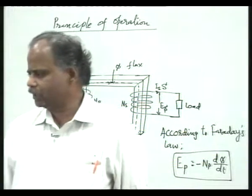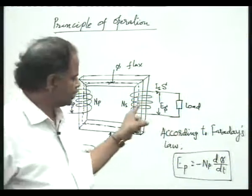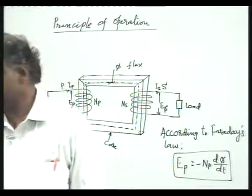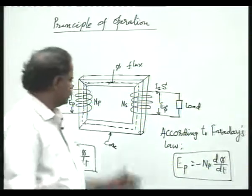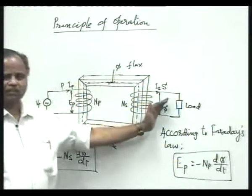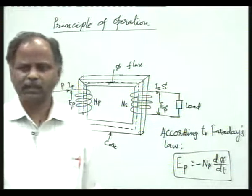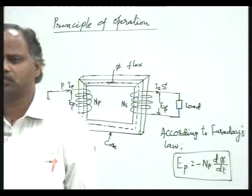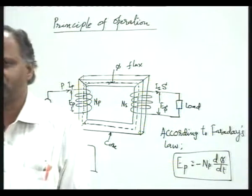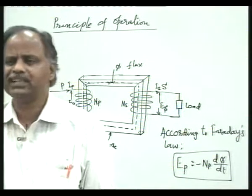The mutually induced EMF in the secondary coil S will circulate current in the load circuit provided the load circuit is complete. Hence, energy is being transferred from the primary coil to the secondary coil by means of a mutual magnetic field. Here we have supplied the energy and here the energy is available. That means the transfer of electrical energy from primary to secondary has taken place, and thereby the device is known as a transformer.